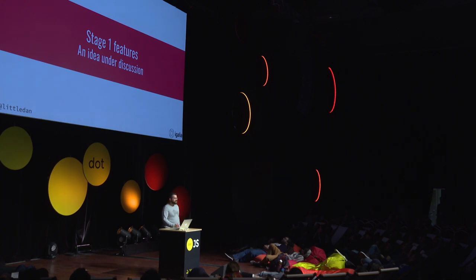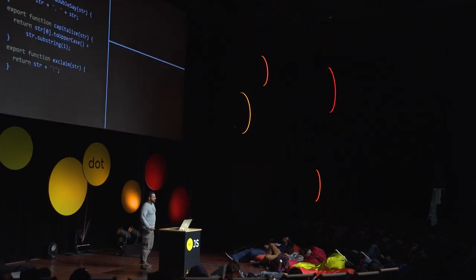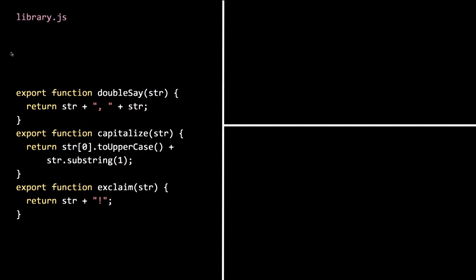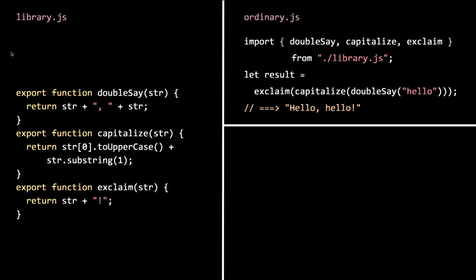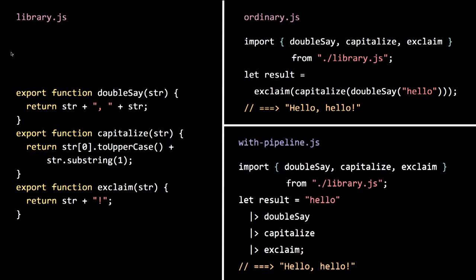Stage one features are ideas under discussion. We have the pipeline operator. Say you have a library of a few functions and you want to call them all on a string in order. One way to do that would be a nested function call, but this feels backwards — you have the string, first you call double-say, then capitalize, then exclaim; you have to read it right to left. With bigger expressions it can become unwieldy and hard to keep track of. With the pipeline operator, you can just pipe it from one thing to the other.